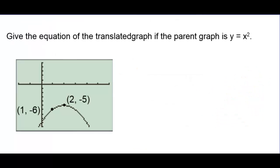Give the equation of the translated graph if the parent graph is y equals x squared. The graph is upside down, so we're reflected over the x-axis — that gives a negative. The parent graph has shifted right 2, so that's minus 2 on the inside, and then shifted down 5. So the equation is y equals negative (x minus 2) squared minus 5.